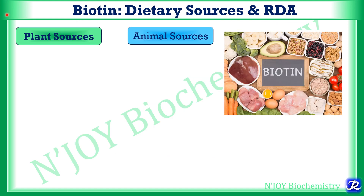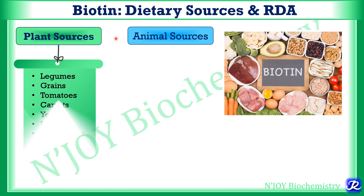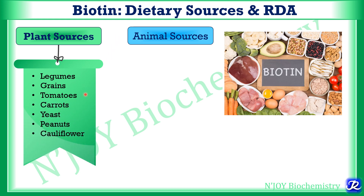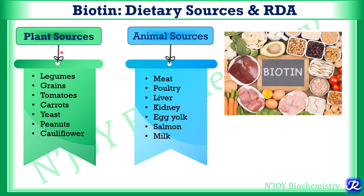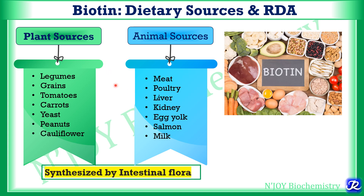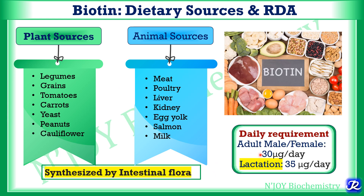Biotin is derived from both plant and animal sources. Plant sources include legumes, grains, tomatoes, carrots, yeast, peanut, and cauliflower. Animal sources include meat, poultry, liver, kidney, egg yolk, salmon fish, and milk. It can also be synthesized from intestinal flora. The daily requirement in adult male and female is about 30 micrograms per day, and during lactation it is increased to 35 micrograms per day.